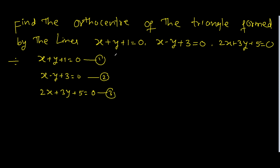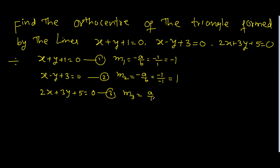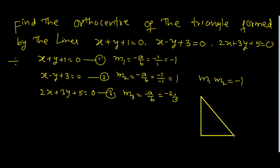First find the slopes of these lines. Slope of first line m1 = -a/b = -1/1 = -1. Slope of second line m2 = -a/b = -1/(-1) = 1. Slope of third line m3 = -a/b = -2/3. Observe that m1 into m2 = -1 into 1 = -1, which means the first two lines are perpendicular.